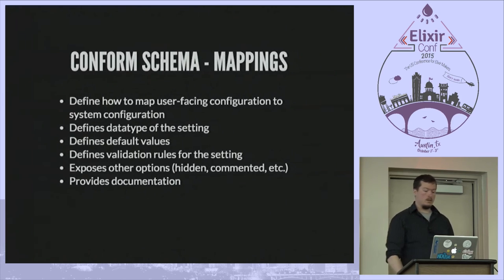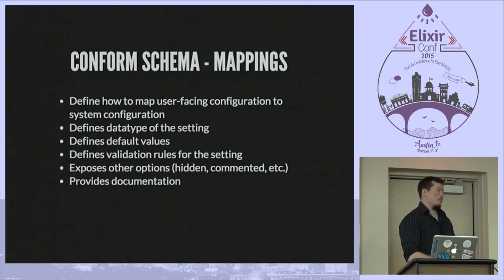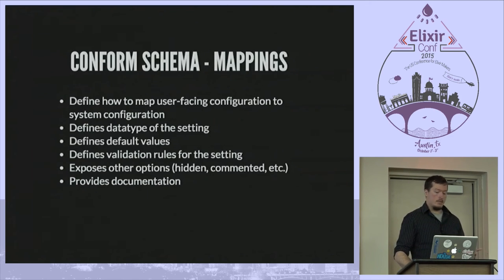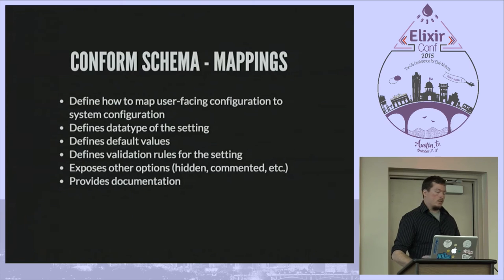Mappings define how to map a user-facing setting to your backend setting. They tell you what the data type of the setting is — you can say the value is an atom, a list of atoms, a list of lists of atoms, and so on. Complex types are also supported. They define default values, and they define validation rules — allowing you to say when somebody provides a value for this setting, run this validator against it and make sure it's legit before the application starts up.